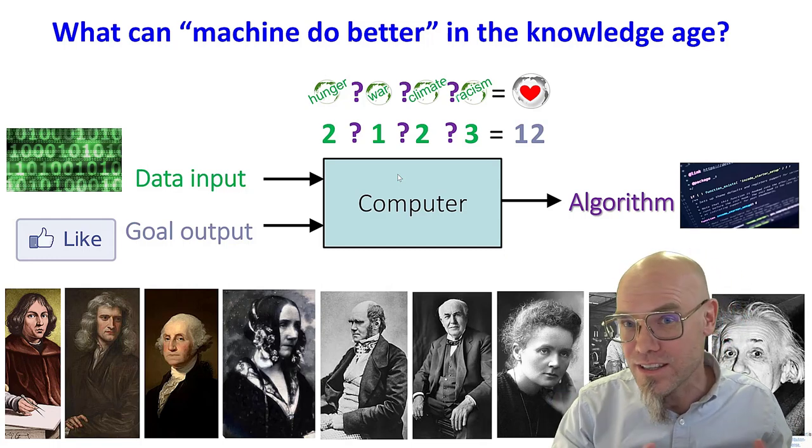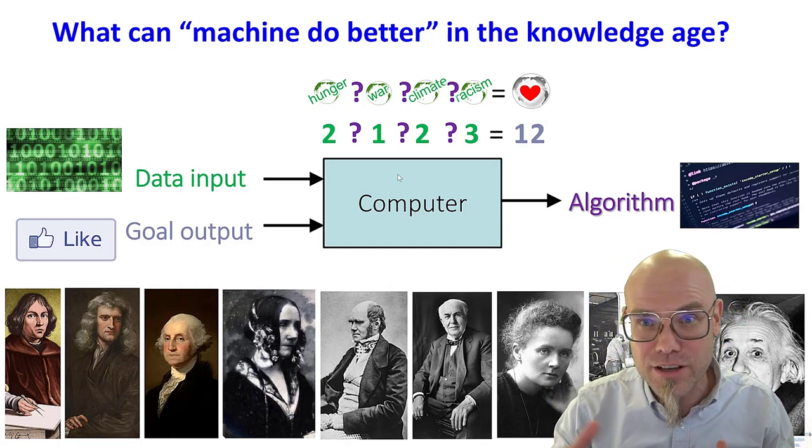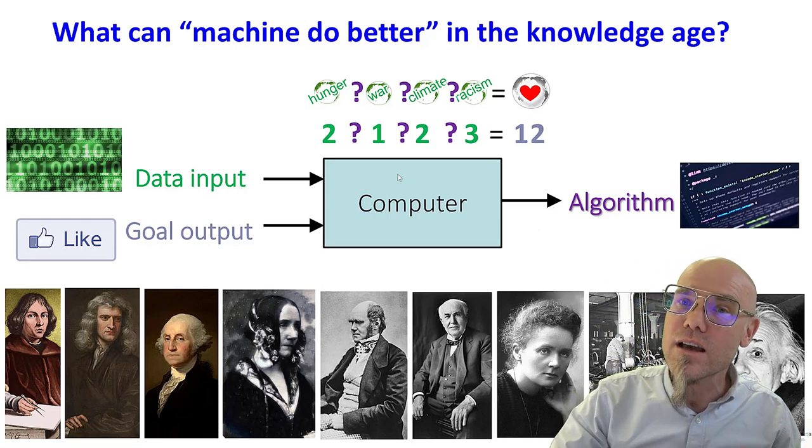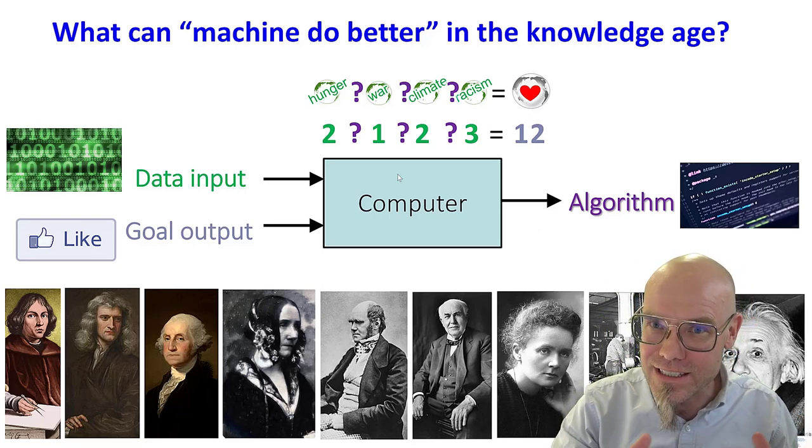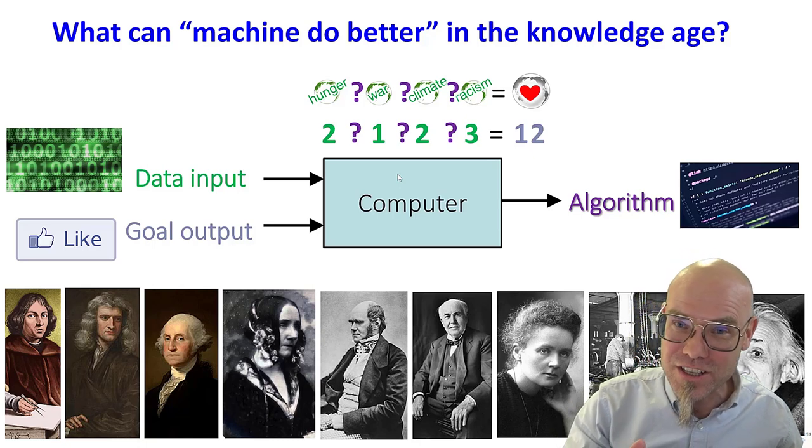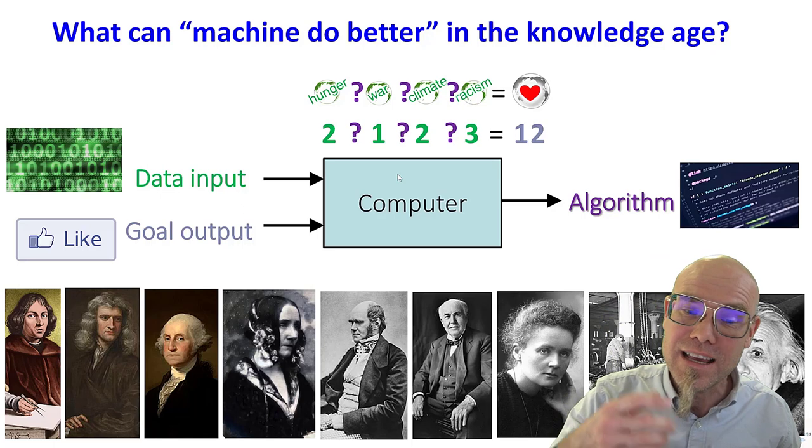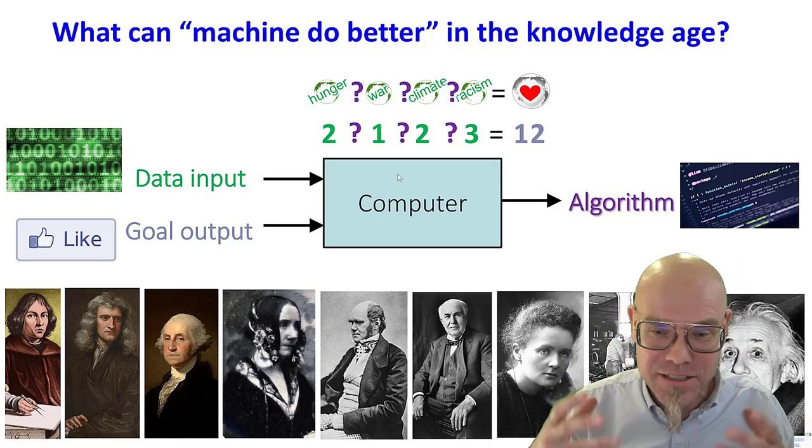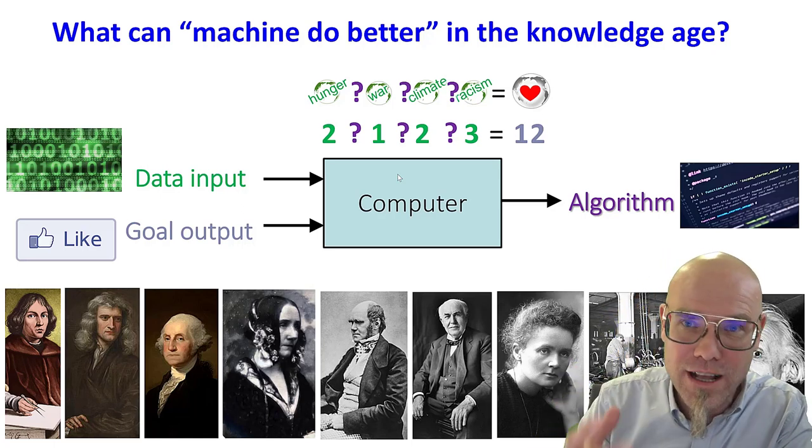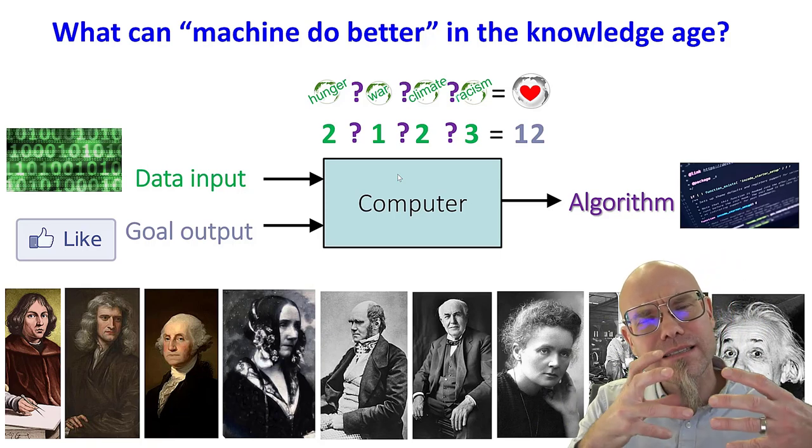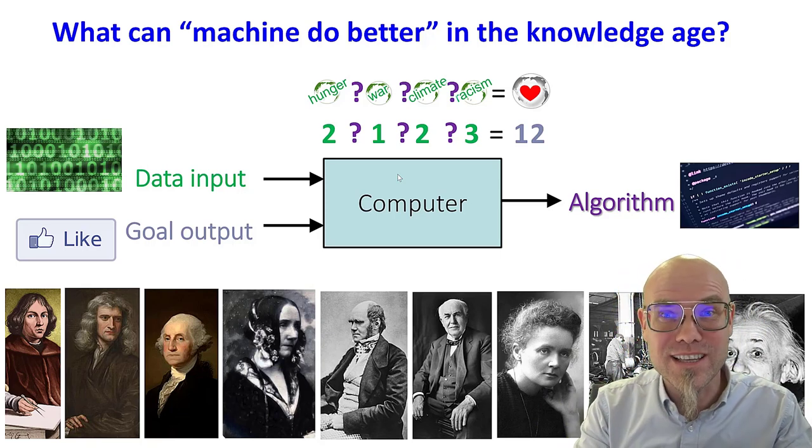George Washington and the founding fathers here in America, the French revolution showed us a new way of organizing society through democracy, representative democracy. Ada Lovelace showed us how to program a computer and Darwin, Edison, Marie Curie, Henry Ford, Albert Einstein. These are all people that showed us a new way of doing things.